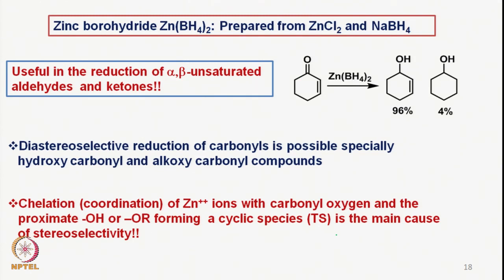Now we look at another reducing agent which is zinc borohydride. It is readily prepared from zinc chloride and sodium borohydride. As you can see, sodium chloride would be released from the mixture as a byproduct and we get the corresponding zinc borohydride. It is specifically useful in the reduction of alpha-beta unsaturated aldehydes and ketones — for example, reducing these to the corresponding allylic alcohol, with very little reduction leading to the corresponding saturated alcohol.